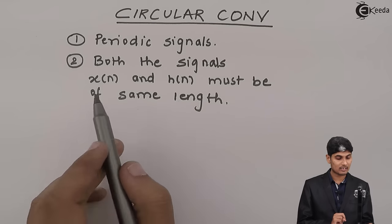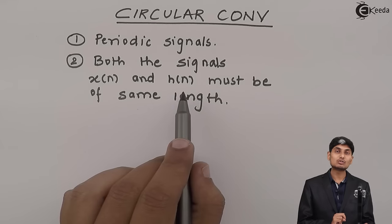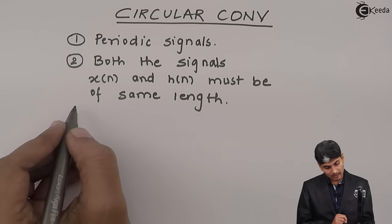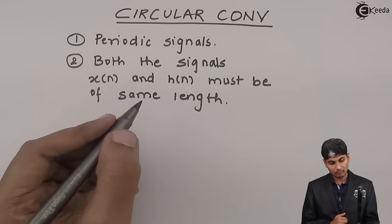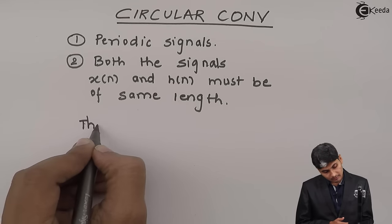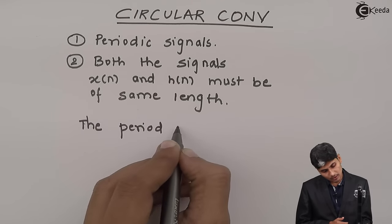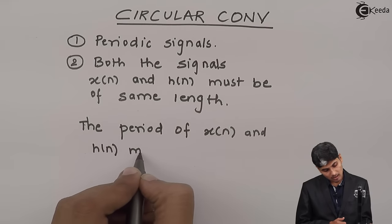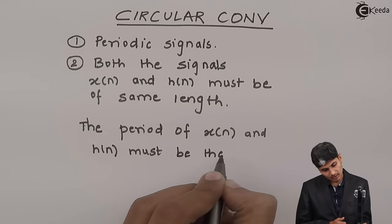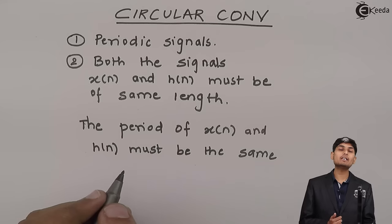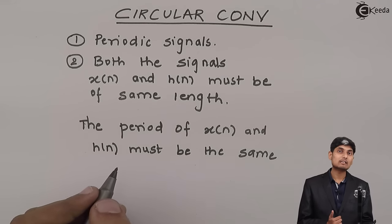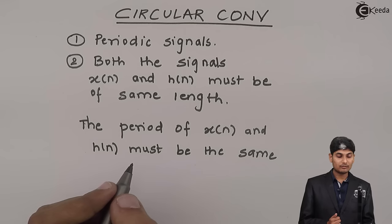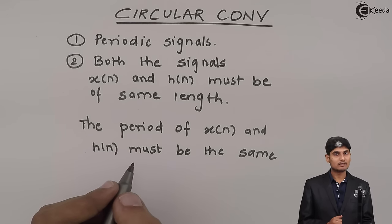For convolution we use the signals x of n and h of n, and both of them should be of equal size or equal length. In short, the period of x of n and h of n must be the same. We should have the period of x of n and h of n to be the same, then only we can perform circular convolution. If these two conditions are met then we can go for circular convolution.